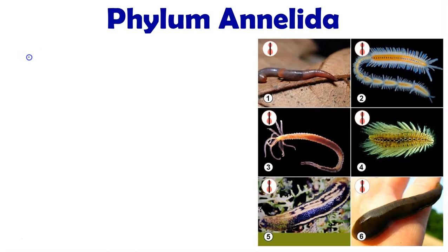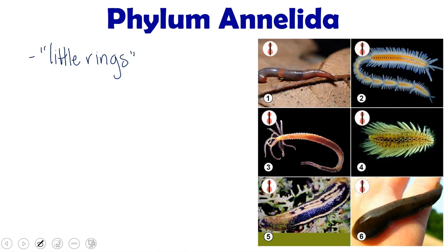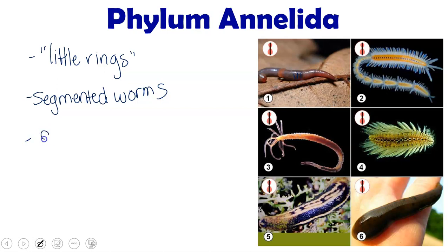Welcome and thank you for joining us for our lecture on phylum Annelida. The roots of this word mean 'little rings,' and if you look at these creatures when they're out and about, like an earthworm, you can see that their bodies do in fact have little rings on them. We more commonly know them as our segmented worms, like earthworms and some fireworms, and we have about 9,000 species of annelids.